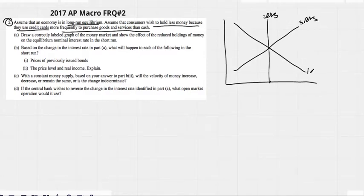In equilibrium, this is equilibrium or long run equilibrium or potential GDP or full employment or your natural rate of unemployment. It's all those things. So we are in equilibrium. We don't really need that. They do ask us though to draw a correctly labeled graph of the money market and show the effects of the reduced holdings of money. People want to hold less money. What does that do?